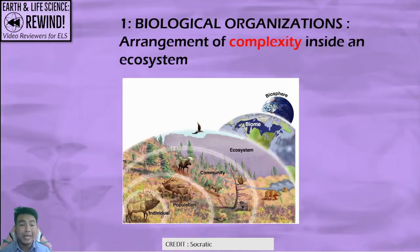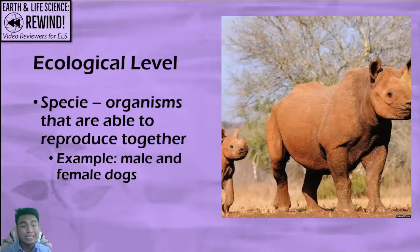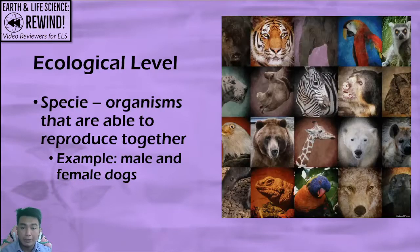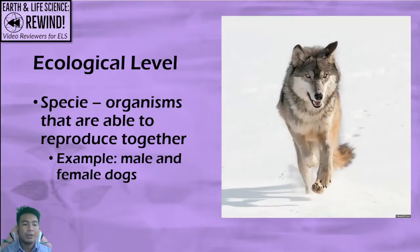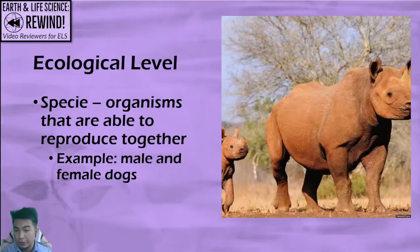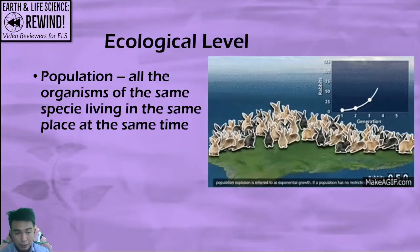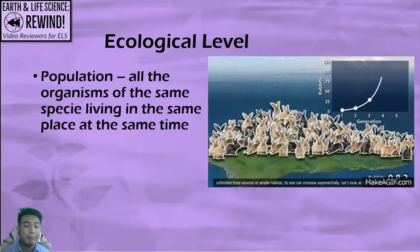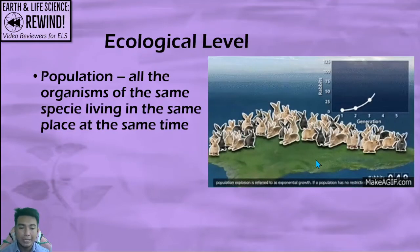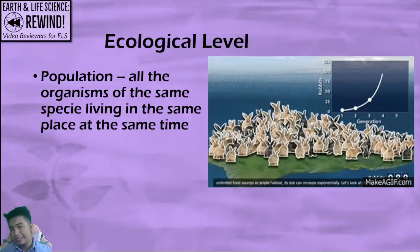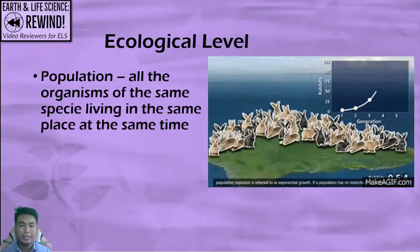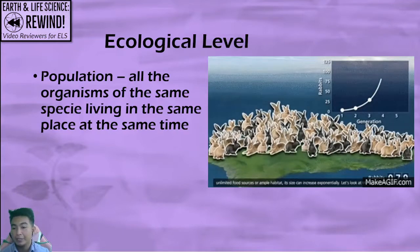Biological organization within an ecosystem is how complexity is arranged inside an ecosystem. It starts first with species — the smallest part of the ecological hierarchy. Species are organisms that are able to reproduce with each other. Populations are organisms of the same species living in the same place at the same time. The entirety of the rabbits in the Philippines, for example, is a population.